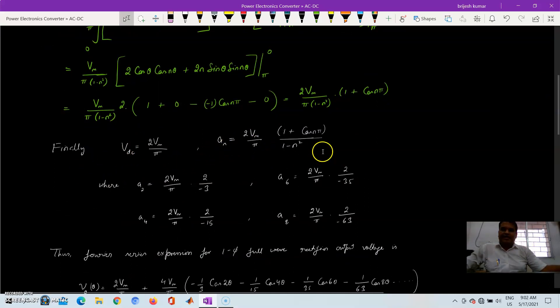VDC and An components what we can find and here we will take the values of An, N to multiple of 2. So 2, 4, 6, 8. By substituting the value of N to 2 we get 2 by minus 3 and so on.